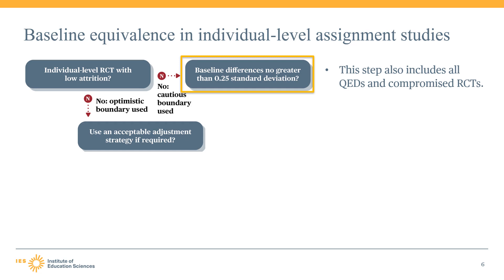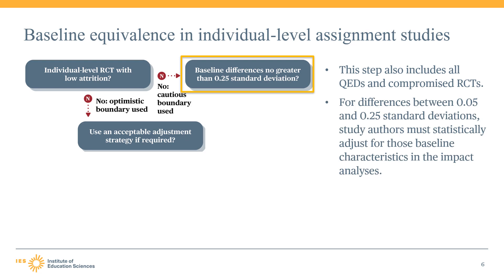The WWC standard for baseline equivalence establishes the relationship between effect sizes and the three possible equivalence results. If the absolute value of the effect size at baseline is between 0 and 0.05 standard deviations, then the groups are considered equivalent and the findings satisfy the baseline equivalence standard. If the absolute value of the effect size at baseline is larger than 0.05 and less than or equal to 0.25 standard deviations, then the WWC says that the study must use a statistical adjustment in the analysis to demonstrate equivalence.